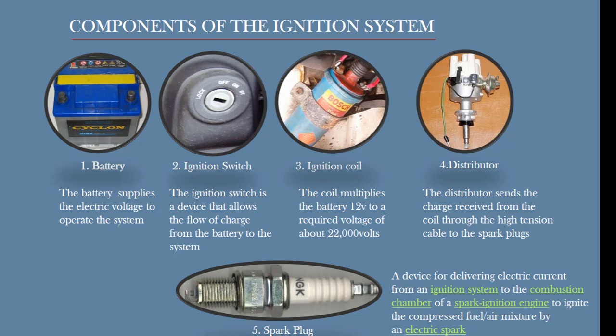The coil multiplies the battery's 12 volts to a required voltage of about 22,000 volts or more. The distributor sends the charge received from the coil through the high tension cable to the spark plug. The spark plug is a device for delivering electric current from the ignition system to the combustion chamber of a spark ignition engine, to ignite the compressed air and fuel mixture, thereby causing burning.